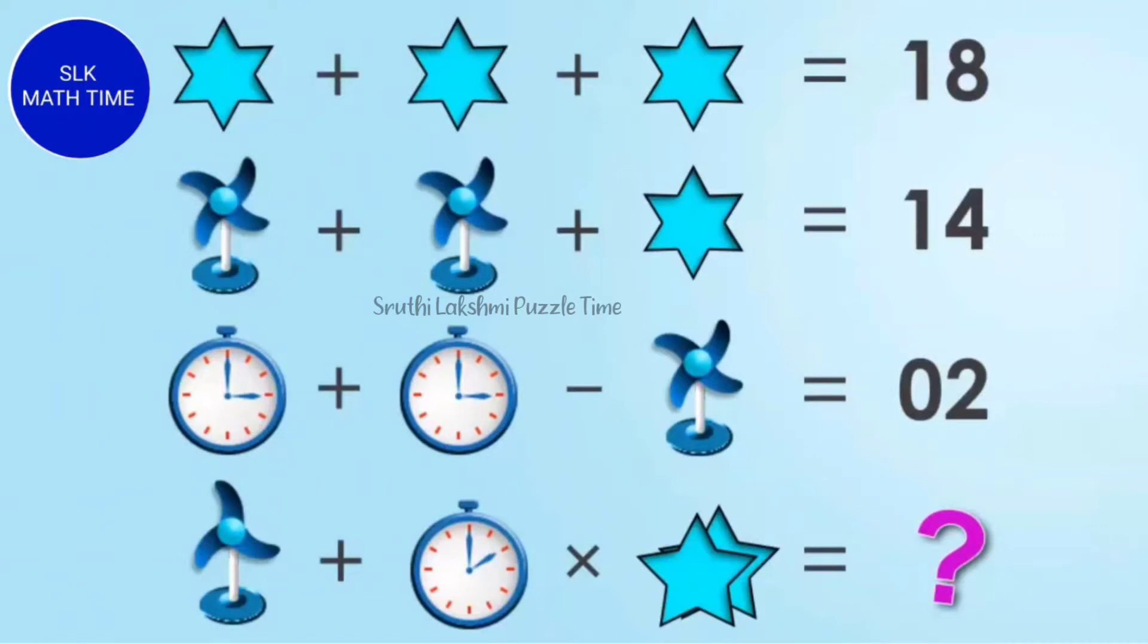So here we see 4 equations. The first equation is star plus star plus star is 18. Fan plus fan plus star is 14. Clock plus clock minus fan is 2. Fan plus clock into 2 star is what? You will have 20 seconds to solve this problem. Your time starts now.